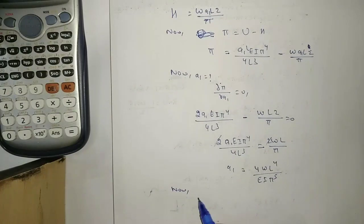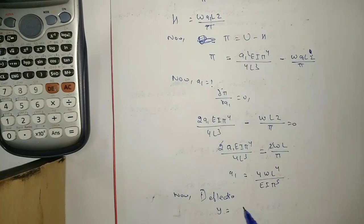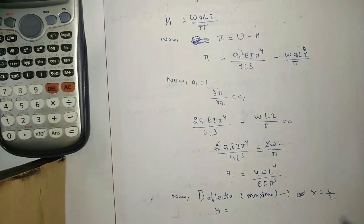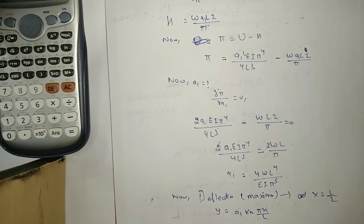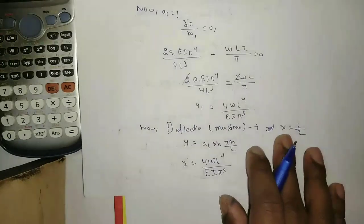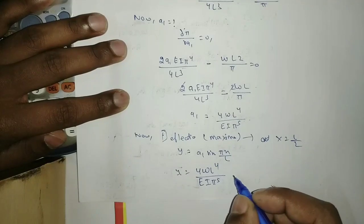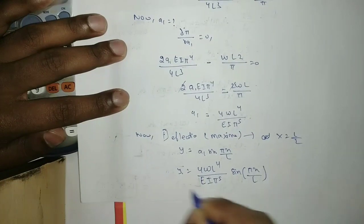Now we can find the deflection. Substituting the value of a1 back into the trial function: y = a1·sin(πx/L) = [4WL⁴/(EI·π⁵)]·sin(πx/L). This is the deflection equation of the beam.